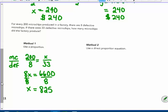I would get that x equals eight hundred and twenty five. So eight hundred and twenty five must have been produced. Eight hundred and twenty five microchips. Use a direct proportion equation. So y over x equals k.